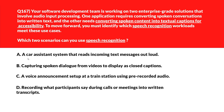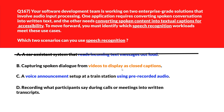Option A: a car assistant system that reads incoming text messages out loud — reading text aloud involves text-to-speech, not recognizing spoken input. Wrong answer. Option B: capturing spoken dialogue from videos to display as closed captions — speech recognition enables extracting spoken words from video for captioning. We'll keep it. Option C: a voice announcement setup at a train station using pre-recorded audio — automated announcements use pre-recorded audio or synthesis, not voice recognition. Wrong. Option D: recording what participants say during calls or meetings into written transcripts — speech recognition processes spoken input to generate text transcripts. Lock options B and D.